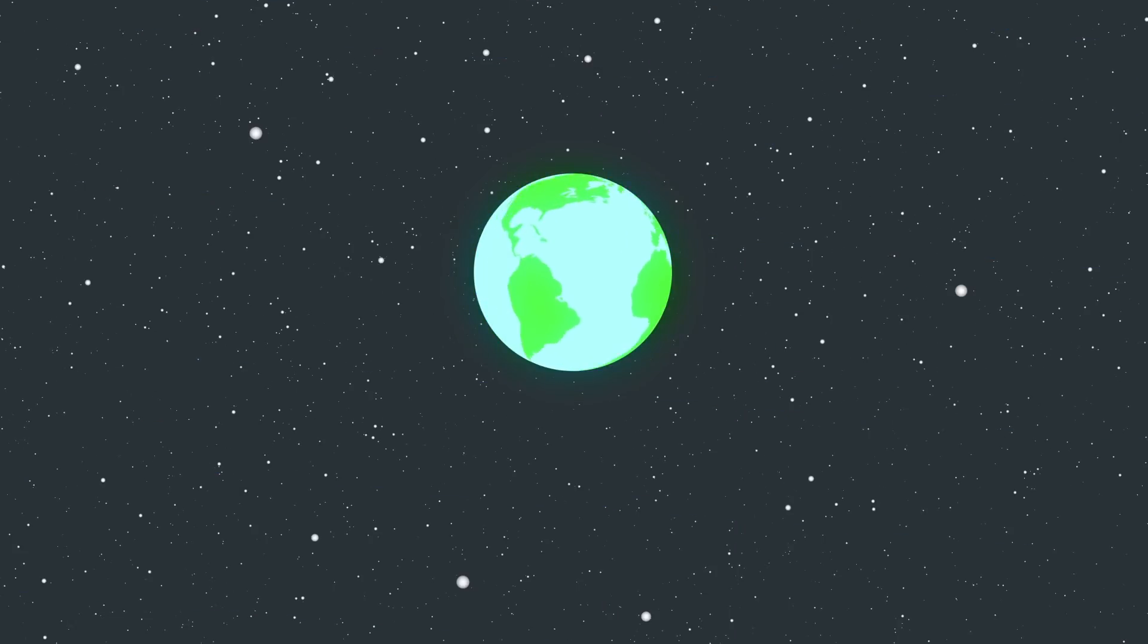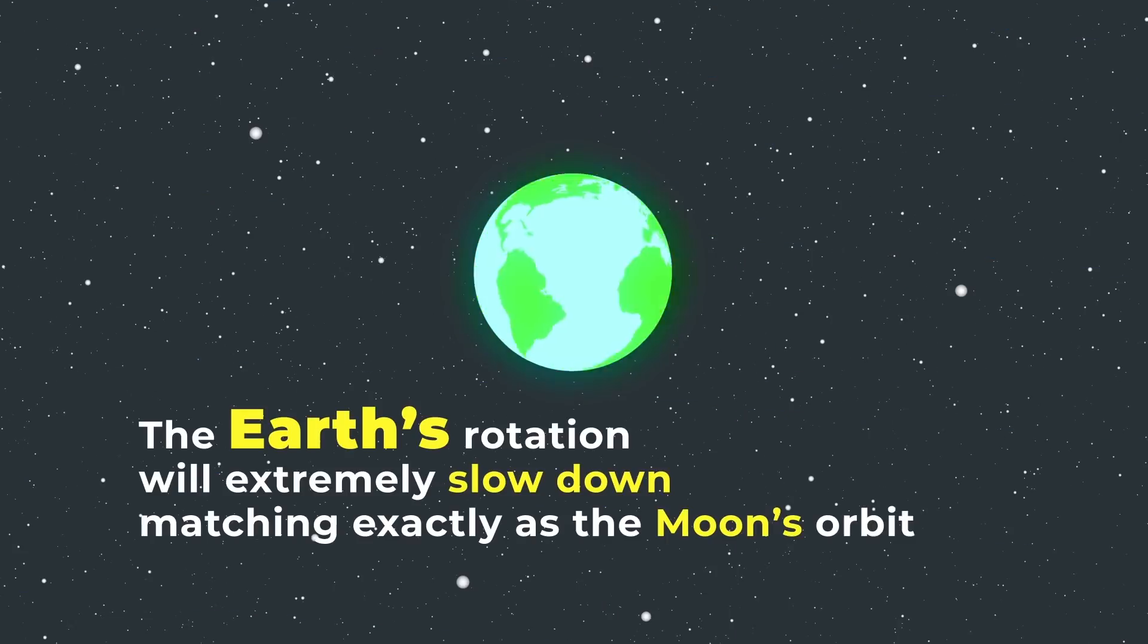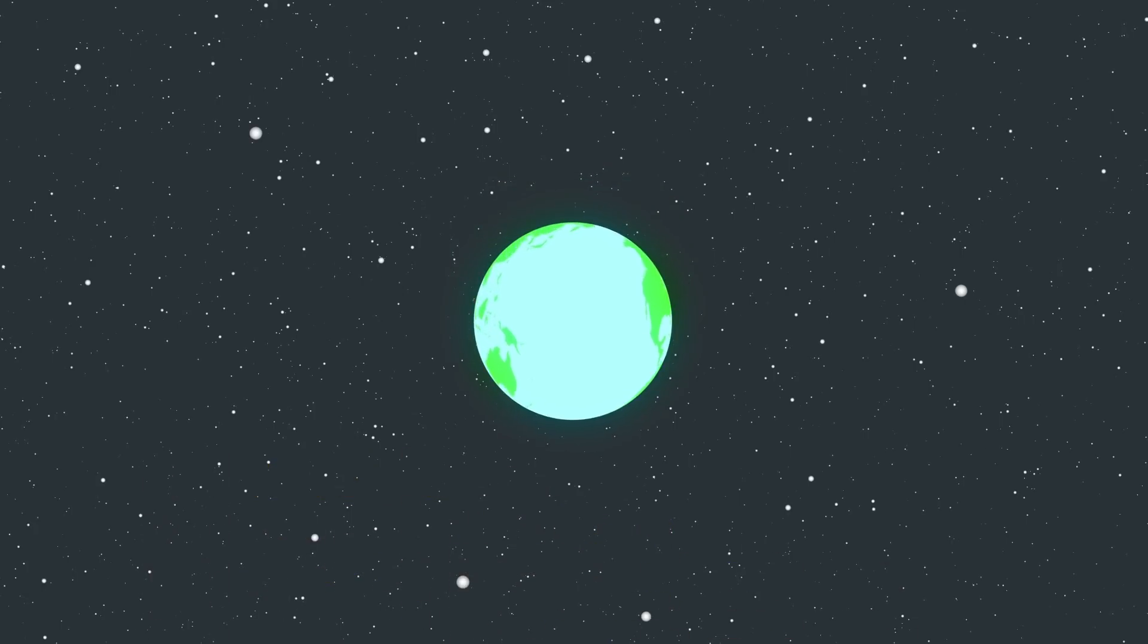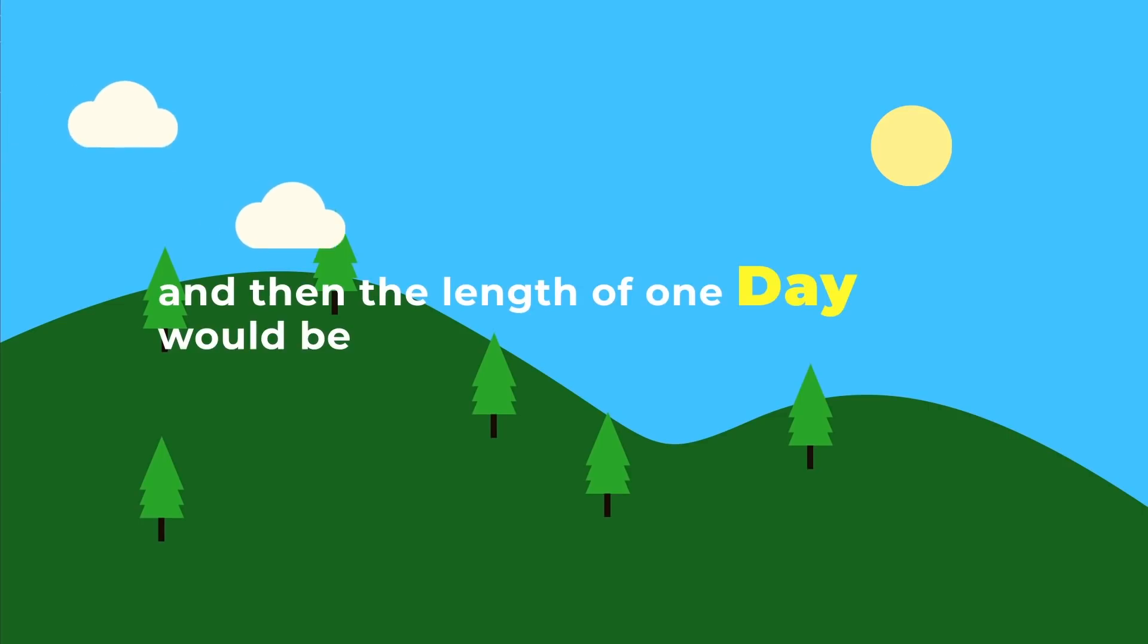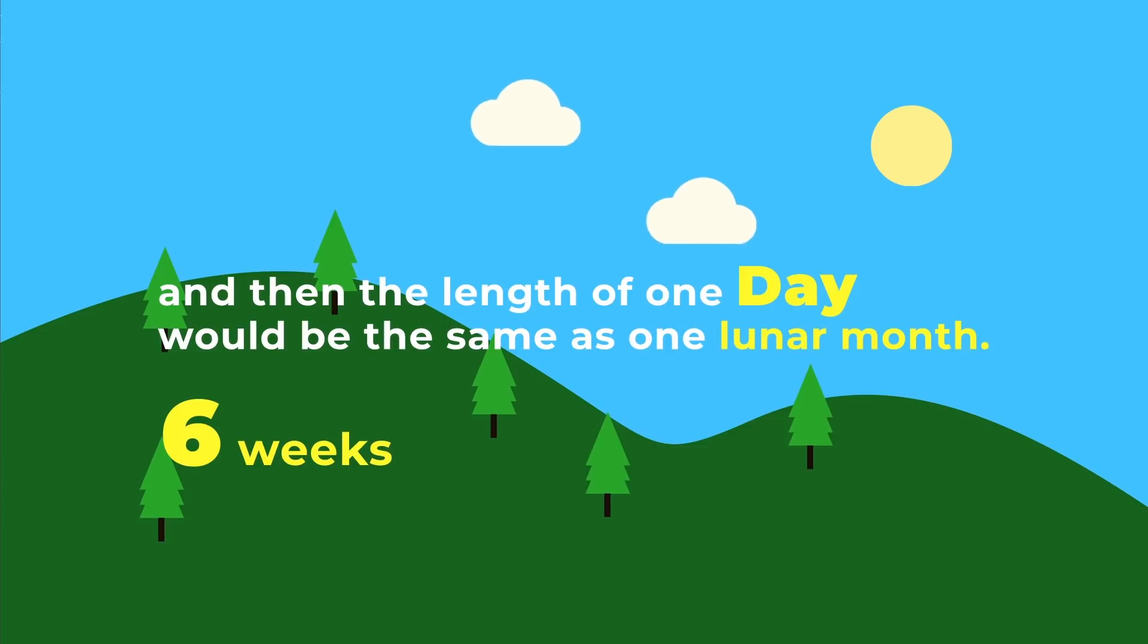In about tens of billions of years from now the earth's rotation will extremely slow down, matching exactly as the moon's orbit. And the length of one day would be the same as one lunar month. And that would be six weeks or so.